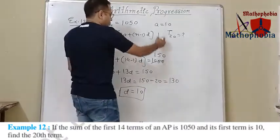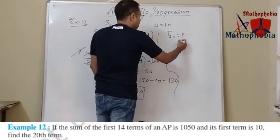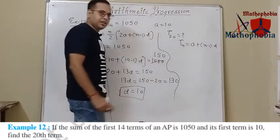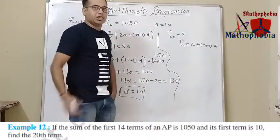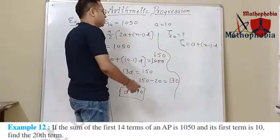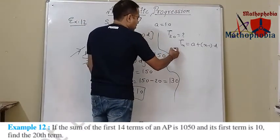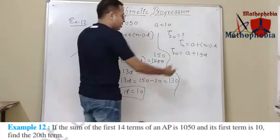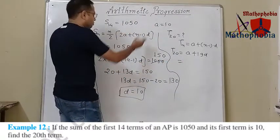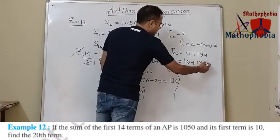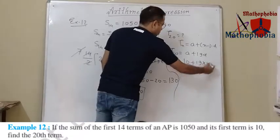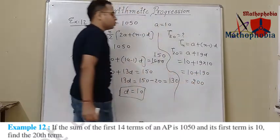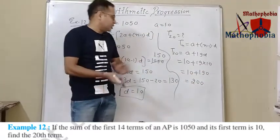Now we can easily find out t20. The formula is tn equals a plus n minus 1 into d, where n equals 20 since we need to find the 20th term. So t20 equals a plus 19d. The value of a is 10 and d is also 10. So we get 10 plus 190, which equals 200. Therefore the 20th term of this arithmetic sequence is 200.